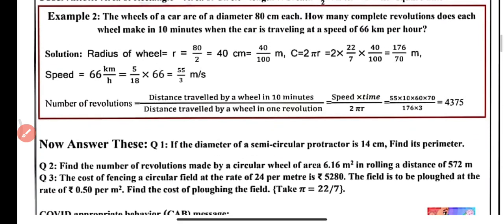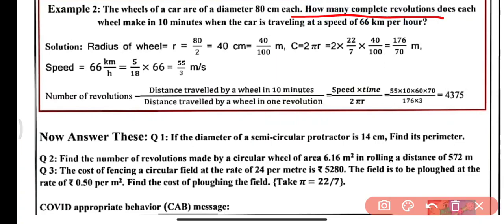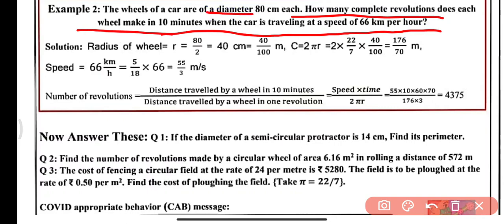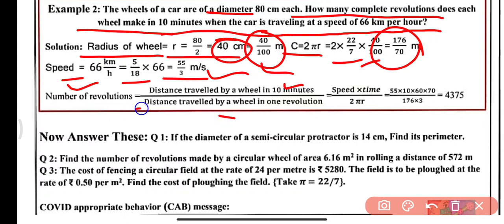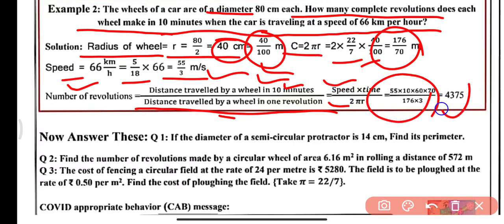Example 2: The wheels of a car are of diameter 80 centimeters each. How many complete revolutions does each wheel make in 10 minutes when the car is traveling at a speed of 66 kilometers per hour? Radius = 80/2 = 40 cm = 40/100 m. Circumference = 2 × (22/7) × (40/100) = 176/70 m. Speed = 66 km/h = 55/3 m/s. Number of revolutions = distance covered in 10 minutes ÷ circumference = 4375 revolutions.